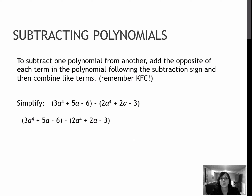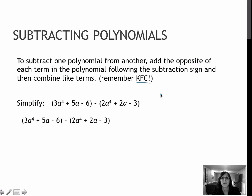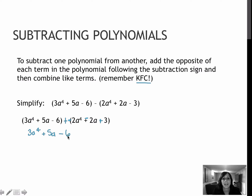When you subtract polynomials, you really want to do the same thing except we have to remember to KFC, which means keep flip change — or leave change opposite, or ching ching, or whatever you use to remind yourself. When we subtract, you have to change the sign. So here I've got a minus sign on the outside of a parentheses, kind of like distributing a negative. I'm basically going to make this plus and then change each sign after it. So now I have 3a to the fourth plus 5a, minus 6, and this is now negative 2a to the fourth, this is now negative 2a, and this is now plus 3.